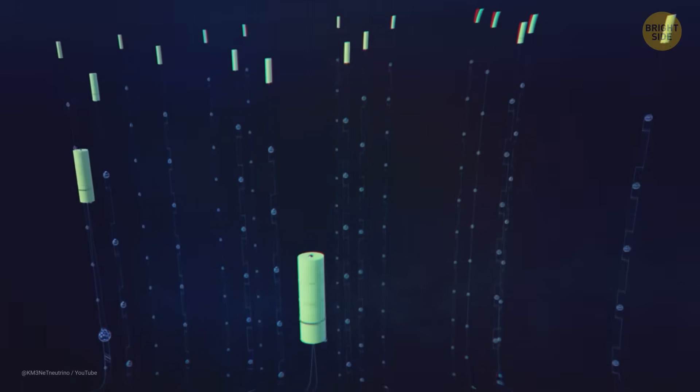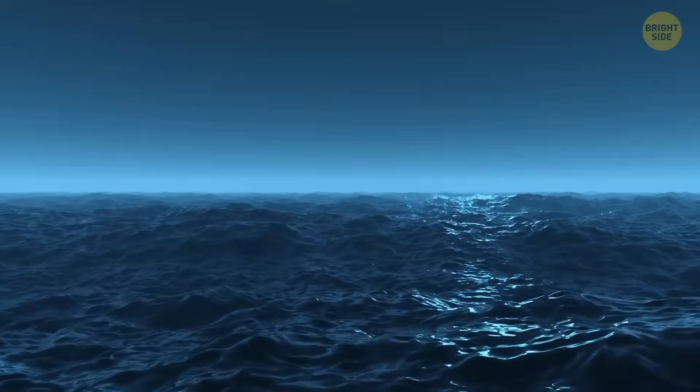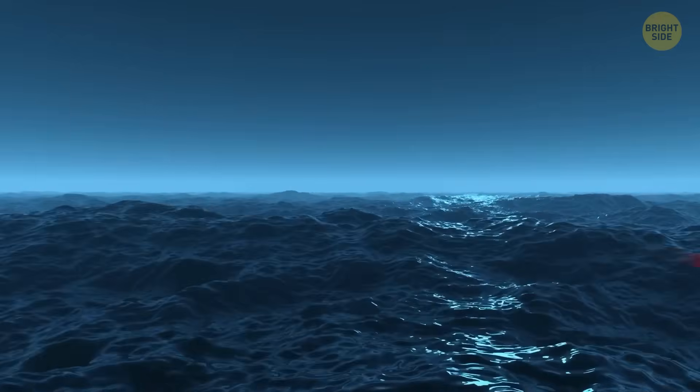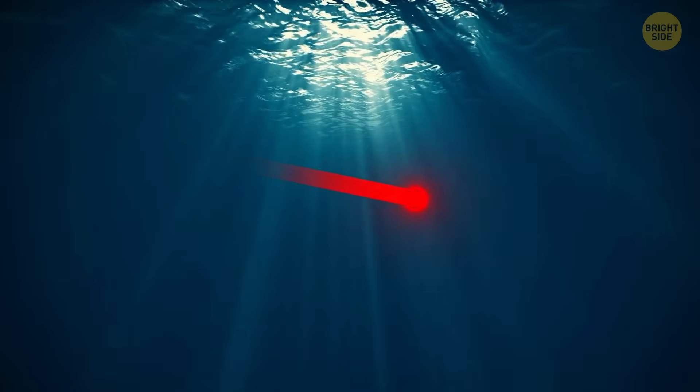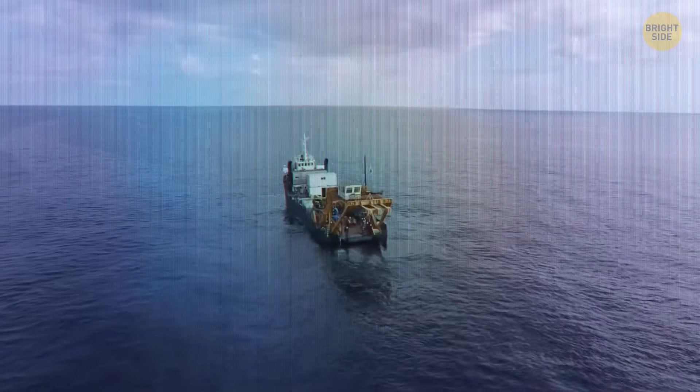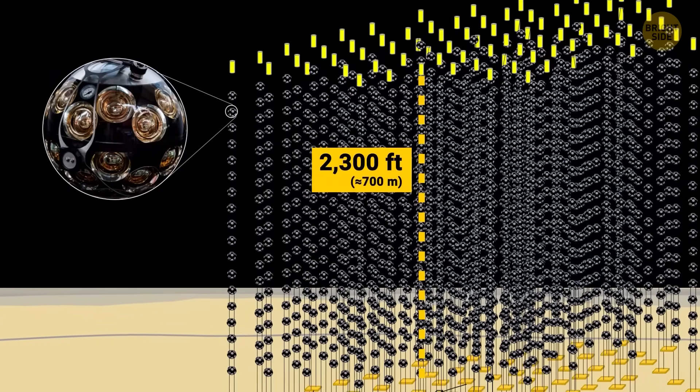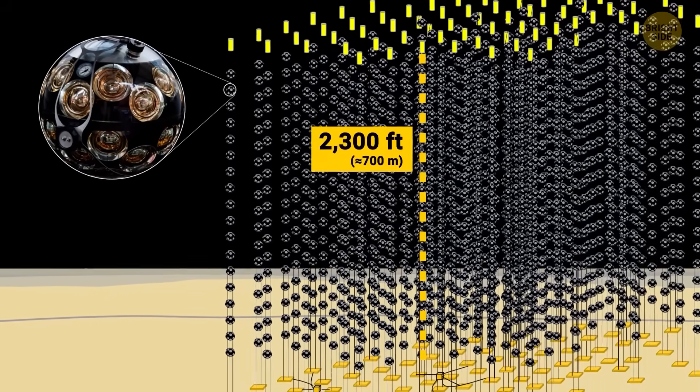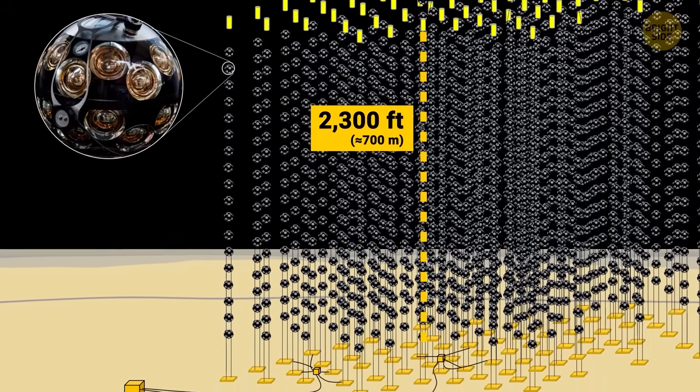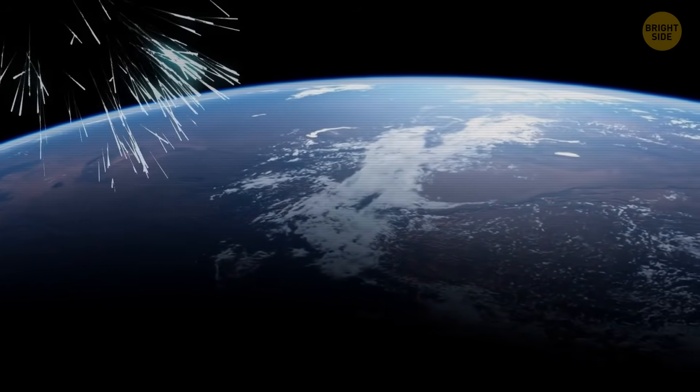Think of it like a necklace of glowing pearls. These spheres are packed with sensitive devices that can detect the faint light produced when a neutrino crashes into water. These detectors are lowered into the sea one strand at a time. Each strand can be 2,300 feet long, and eventually there will be hundreds of these cables with all the sensors hanging on them. The goal is to make one of the biggest and most complex neutrino detectors in the world.